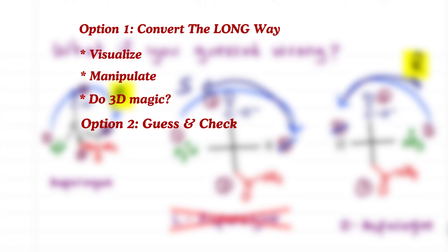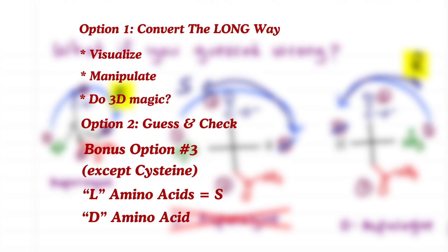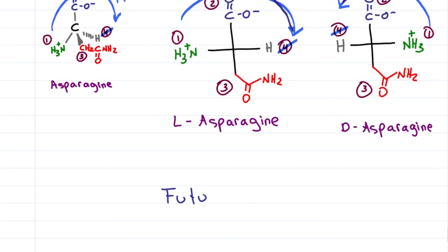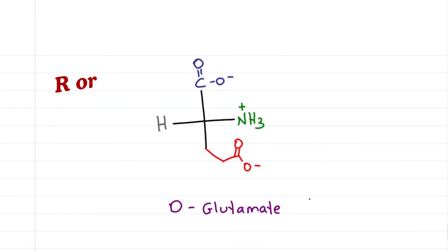Which brings me to bonus trick number three. With the exception of cysteine, all L-amino acids are S and all D-amino acids are R. MCAT students, remember, future doctor. All D-amino acids are R and L-amino acids are S, again, except for cysteine. Is D-glutamate R or S? Future doctor says R.